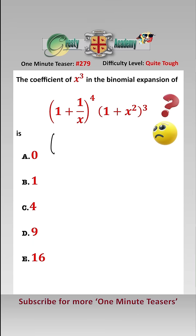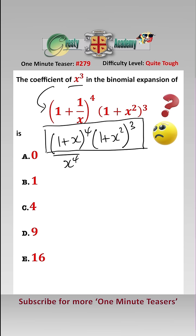The first thing to do is rewrite this as 1 add x to the 4 over x to the 4, times 1 add x squared cubed. Finding the coefficient of x cubed in this is exactly the same as finding the coefficient of x to the 7 in that top bit there.